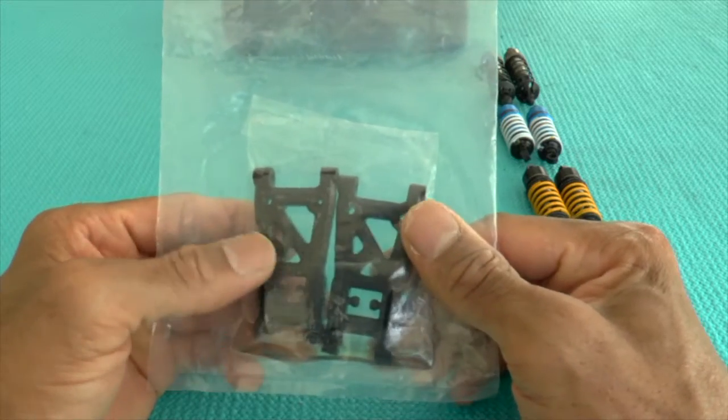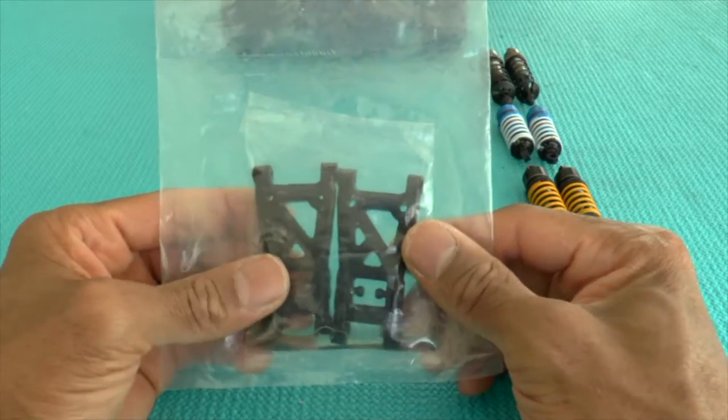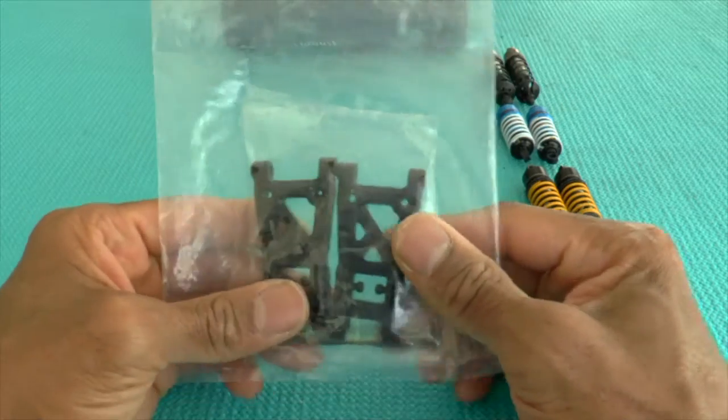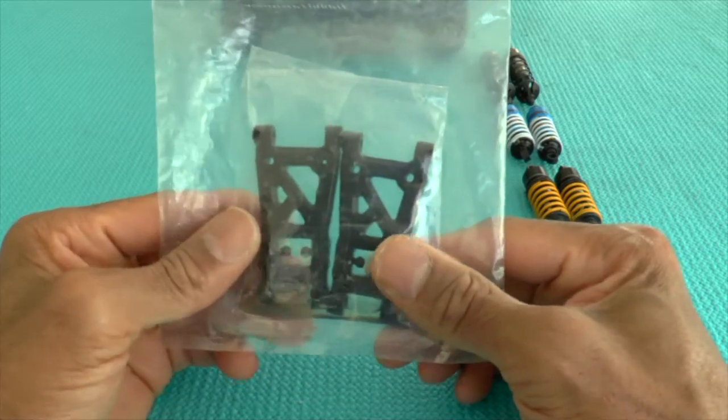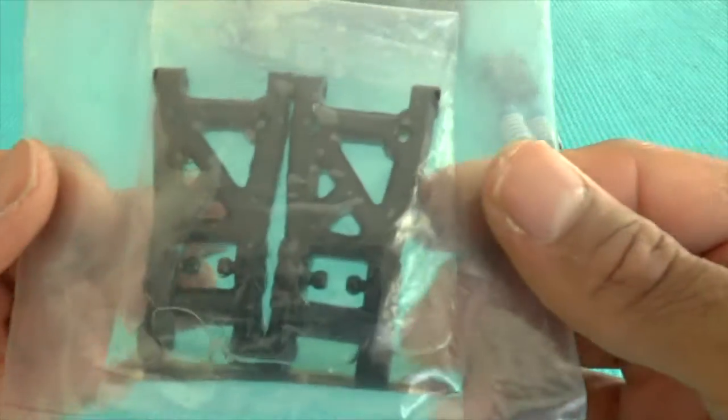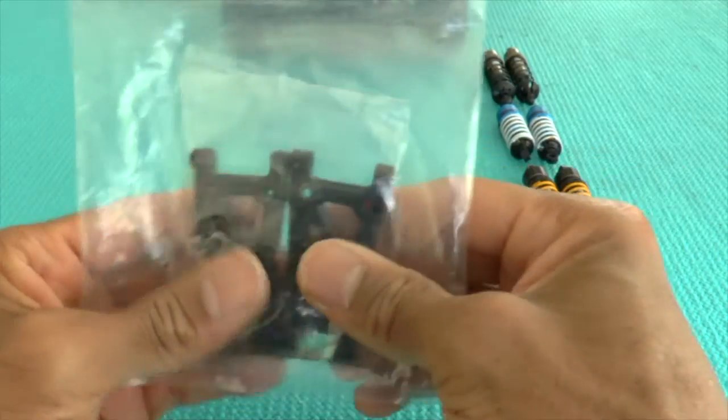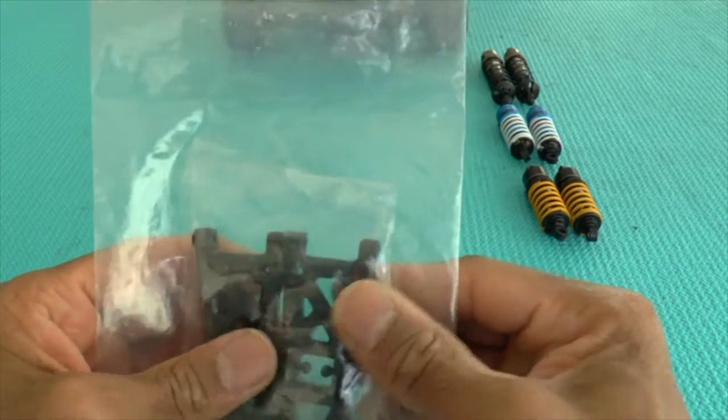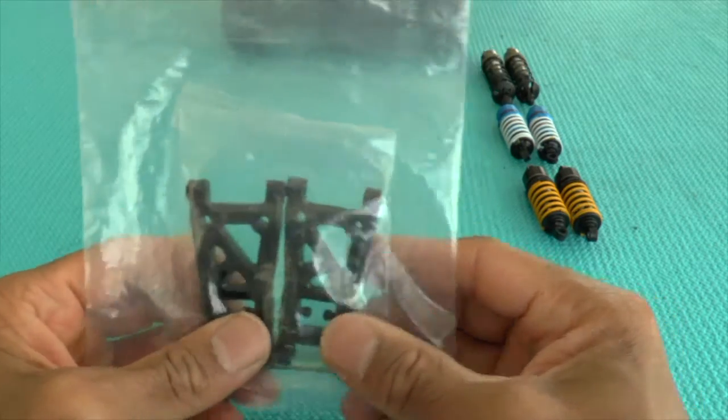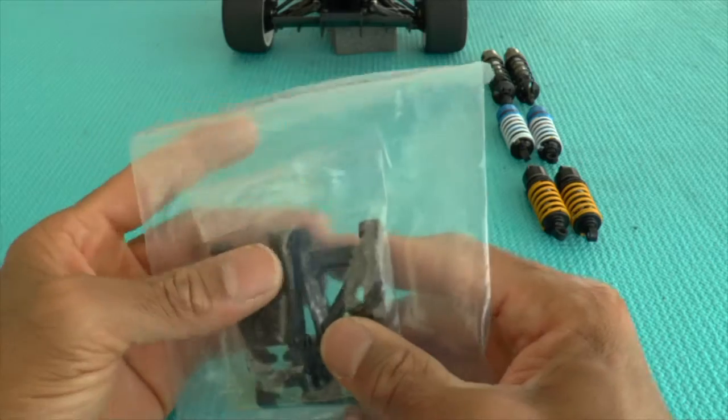When you have plastic or any parts in storage for a while, one thing you can do to preserve them is put them in a little bit of WD-40, as you can see, and just put them in a plastic bag and let them stay. It keeps them preserved.